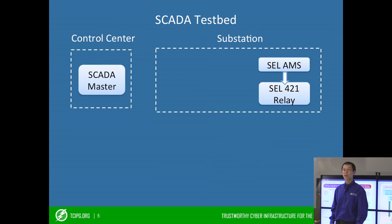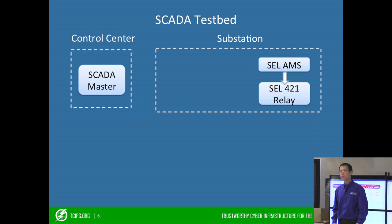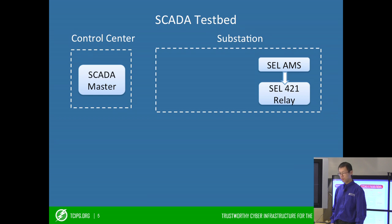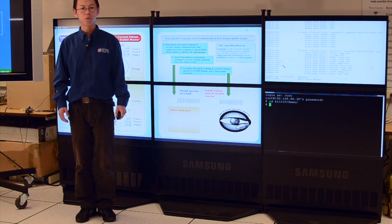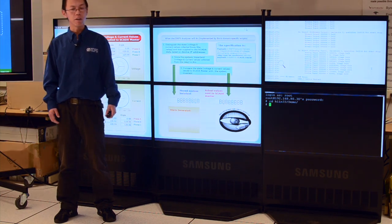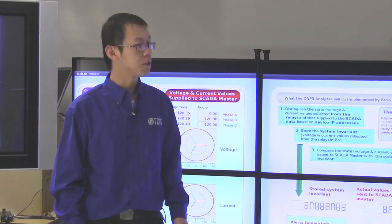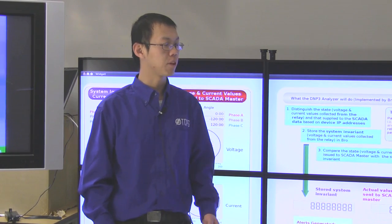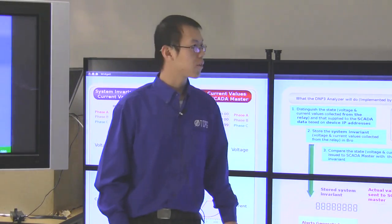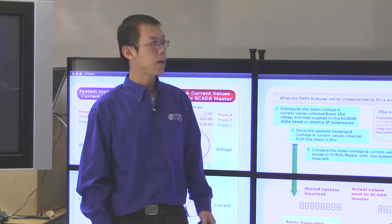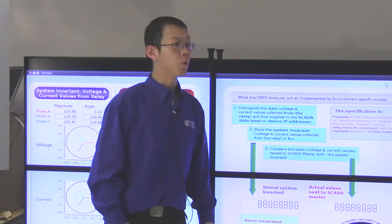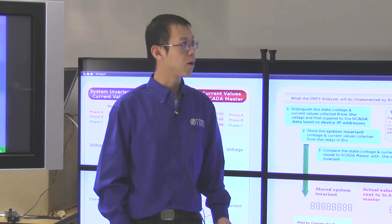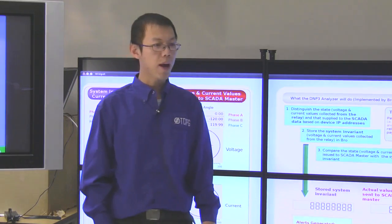Our demo will be carried out in the SCADA testbed which has been deployed in this lab. It contains two parts: the control center and a substation. We use a Windows XP desktop to simulate a SCADA master, which is shown on this screen. We're using software called Protocol Test Harness to simulate a SCADA master, and it will issue DNP3 requests periodically to the substation to request measurement data. In the substation, if anything abnormal happens on the network, the SCADA master usually generates alerts or warnings in this big status window. In the substation, we use several real hardware devices from the Schweitzer Engineering Lab, which are on the rack at the back of this lab.